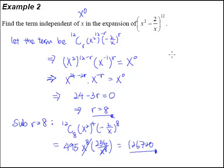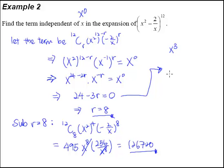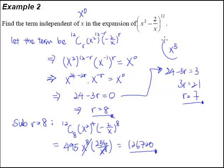Now if the question asks you to find the term in this expansion with x cubed — if they're no longer interested in the term independent of x but instead the term with x cubed — the steps are exactly the same. You can even copy everything here and recycle it. It will be 24 minus 3r equals 3. From here, 3r equals 21, and therefore r equals 7. When r is equal to 7, we will get the term that has got x cubed.